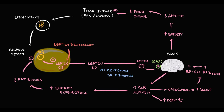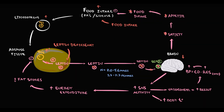As a result, leptin deficiency develops. And in this case, with food intake, the amount of triacylglycerols in adipose tissue increases. But this does not cause an increase in leptin level, because leptin production is disrupted. As a result, leptin level in the blood remains very low. The lower the concentration of leptin in the blood, the lower is the stimulation of leptin receptors. So the feeling of satiety decreases, appetite increases, and food intake increases. In case of leptin deficiency, leptin regulation basically disappears.